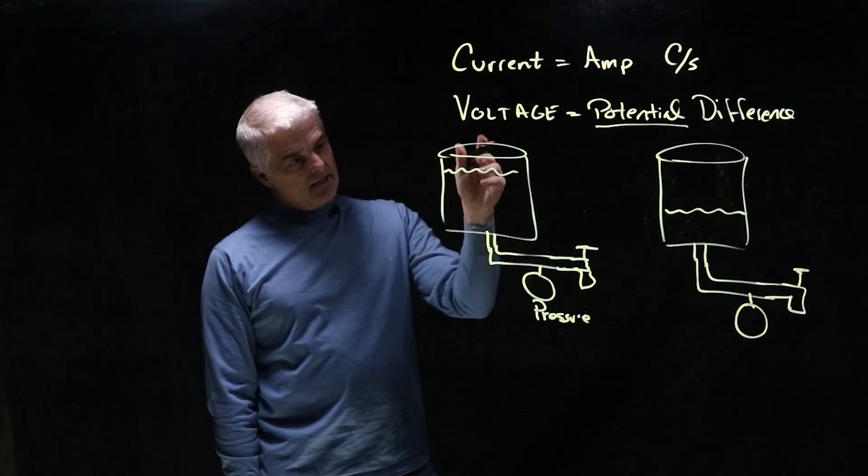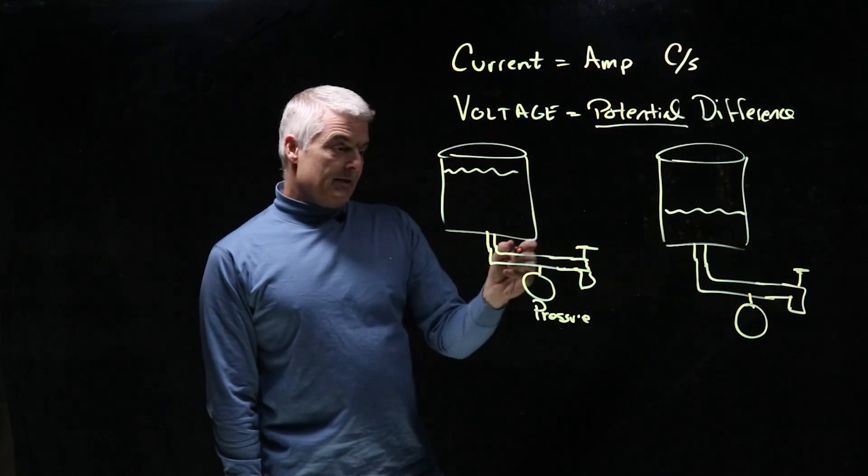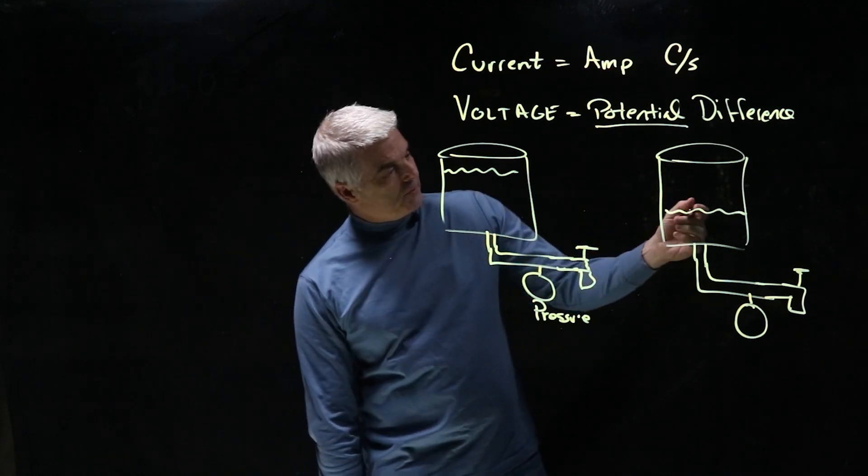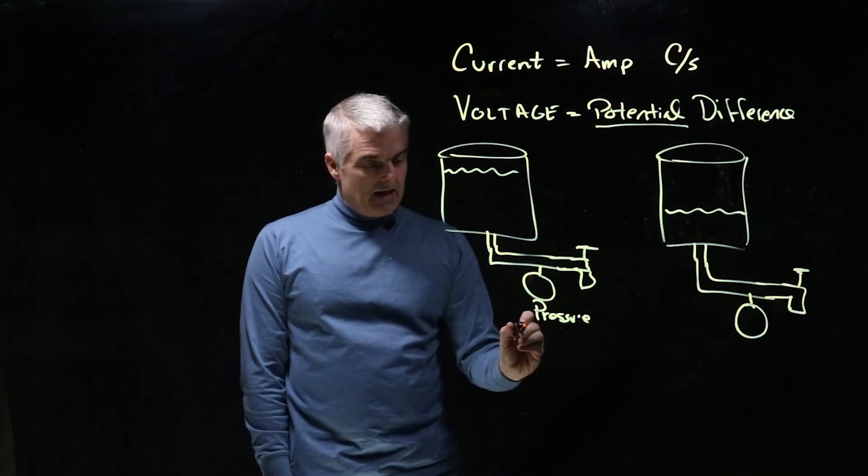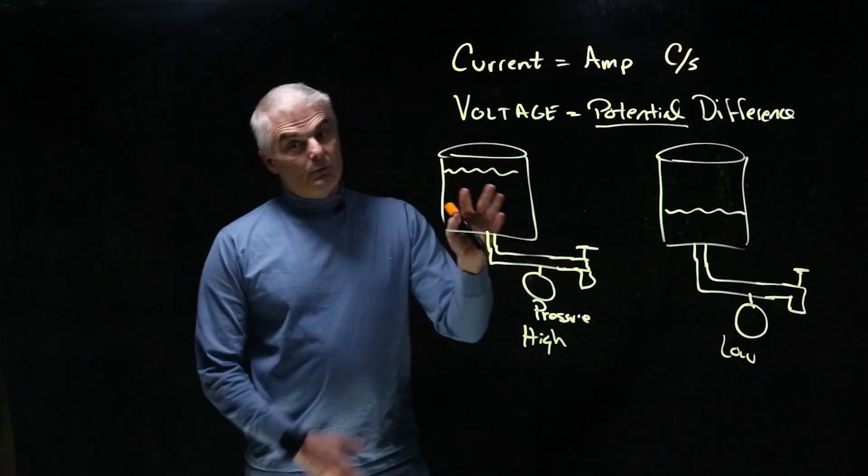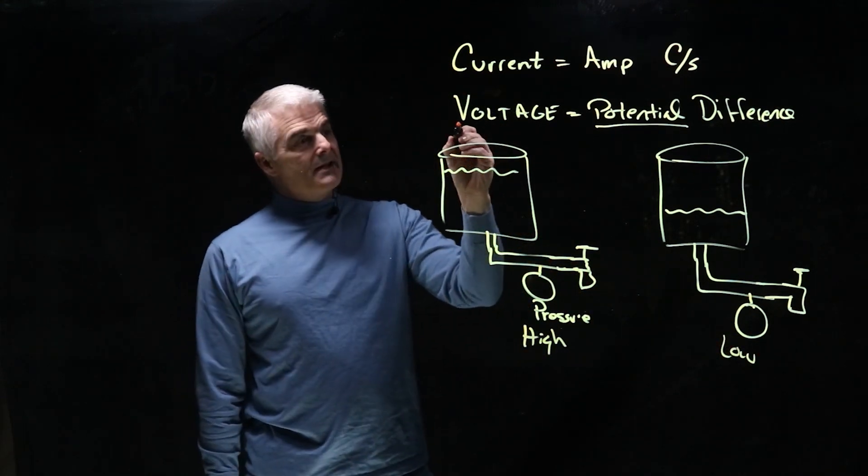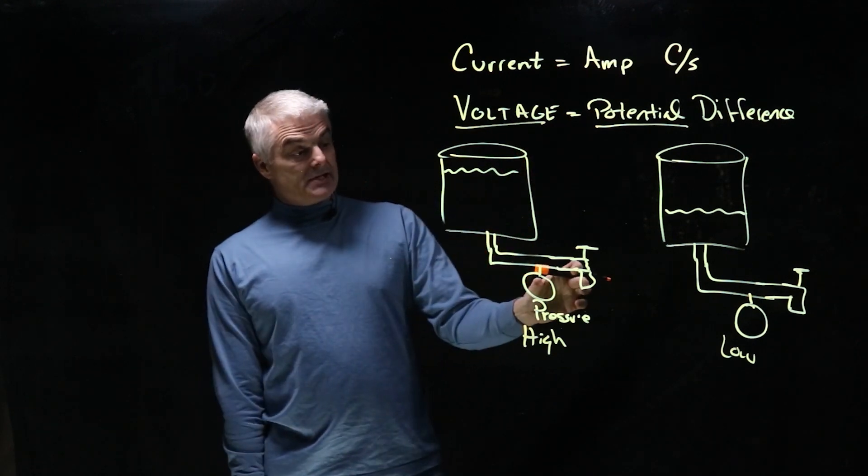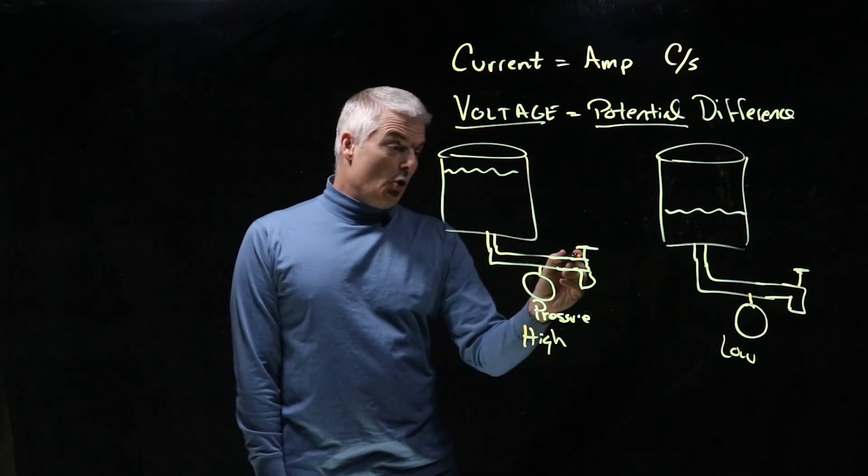where one is filled with less water, the pressure on this one would be high pressure, right? And this should be a low pressure. And what happens in a high voltage situation, this has the potential to do a lot more work. If I were to open this spigot, a lot of water would flow out.